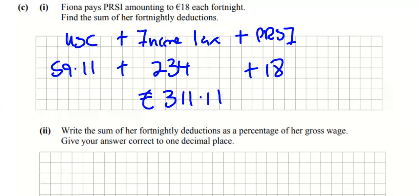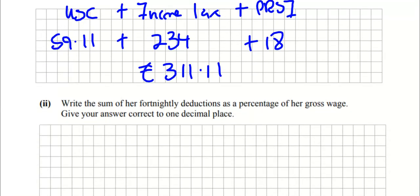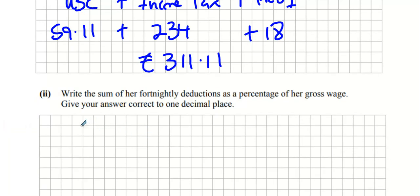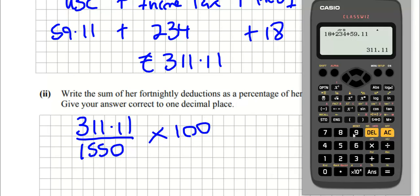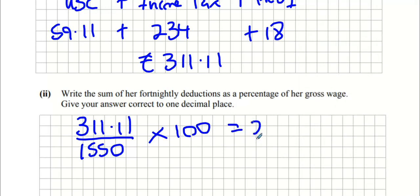Write the sum of her fortnightly deductions as a percentage of her gross wage. Gross wage is 1550. We're going to divide 311.11 by 1550 and multiply by 100. 20.1%.